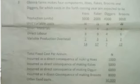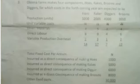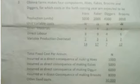The production units for holes, rigs, diggers, and brooms are 1,000, 2,000, 4,000, and 3,000 respectively. The variable costs — direct material, direct labor, and variable production overhead — sum up to: holes = 14, rigs = 17, diggers = 7, and brooms = 12. We also have total fixed costs per annum incurred as a direct consequence of making: holes = 1,000, rigs = 5,000, diggers = 6,000, and brooms = 8,000. Other fixed costs are 30,000, summing to a total of 50,000.